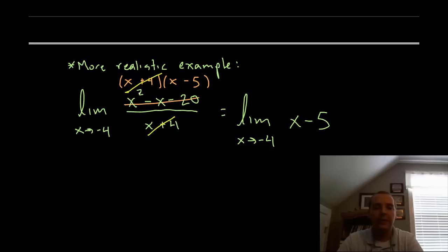So what that leads to is that this limit will be the same as this limit. Notice this limit has no problems, there's nothing wrong with it, it's a continuous function to use that word that we used earlier. You can take negative 4 and just plug it in and our limit is negative 9.